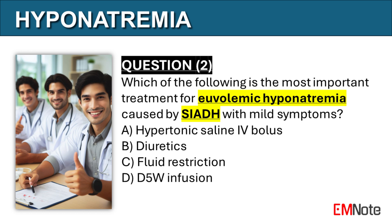Question 2: Which of the following is the most important treatment for mildly symptomatic euvolemic hyponatremia caused by SIADH? The correct answer is C. The most important treatment for mildly symptomatic euvolemic hyponatremia caused by SIADH is fluid restriction.